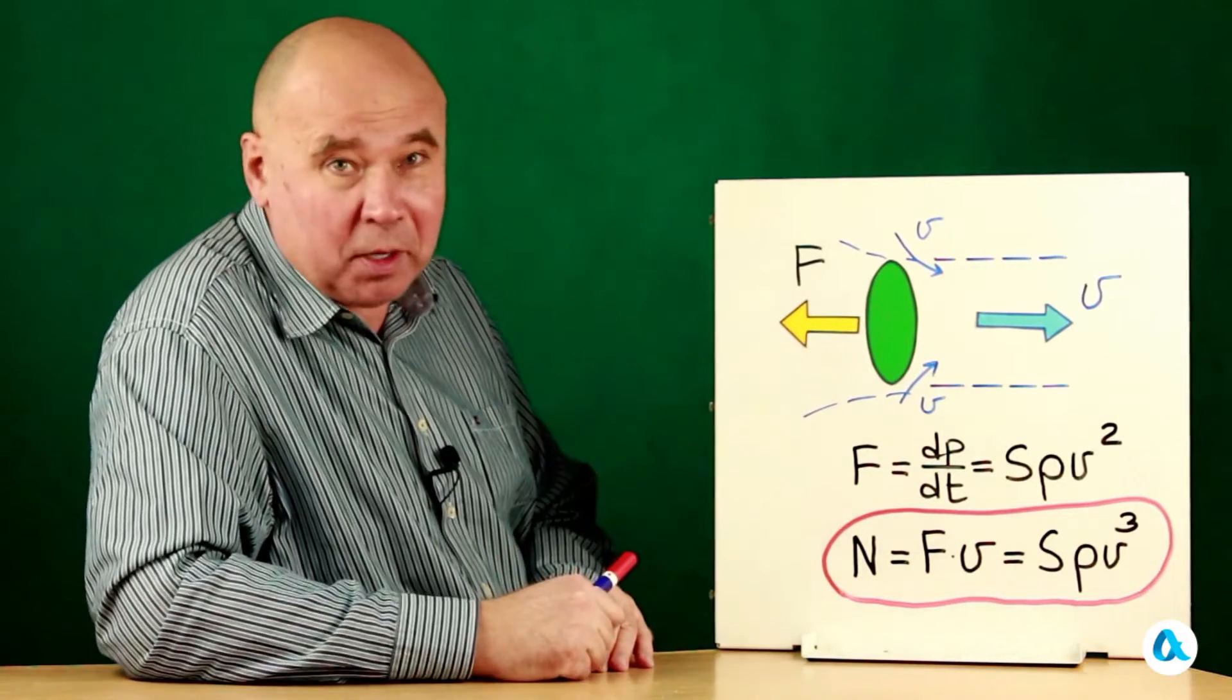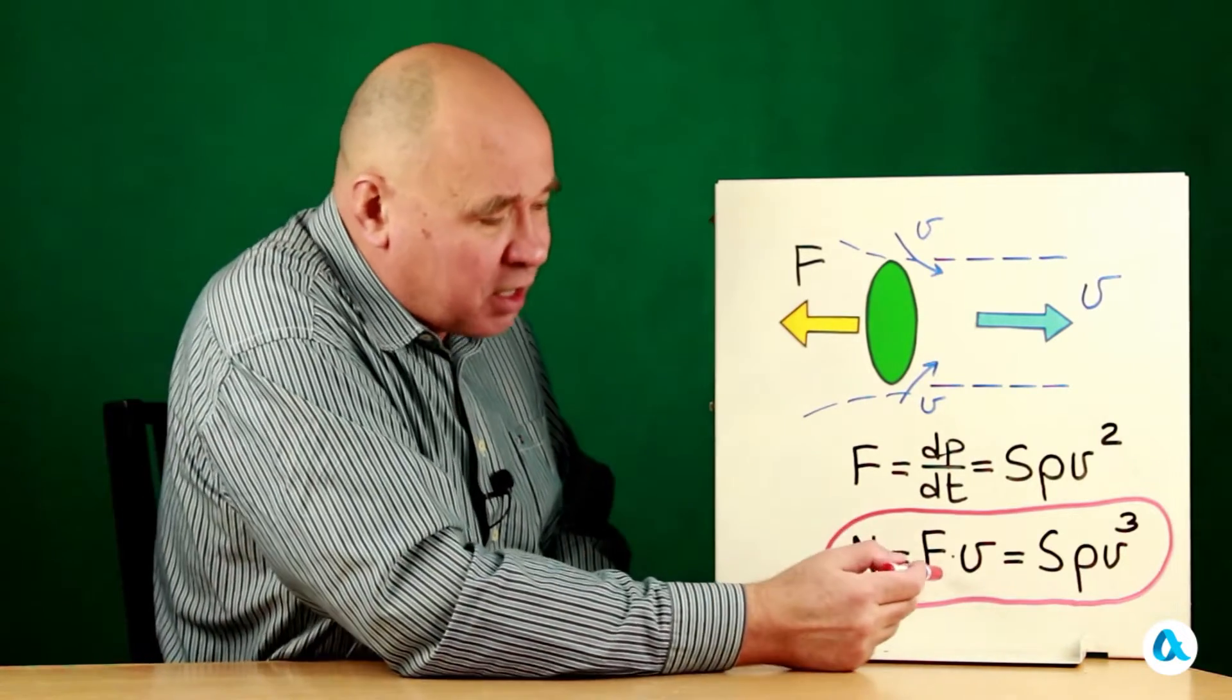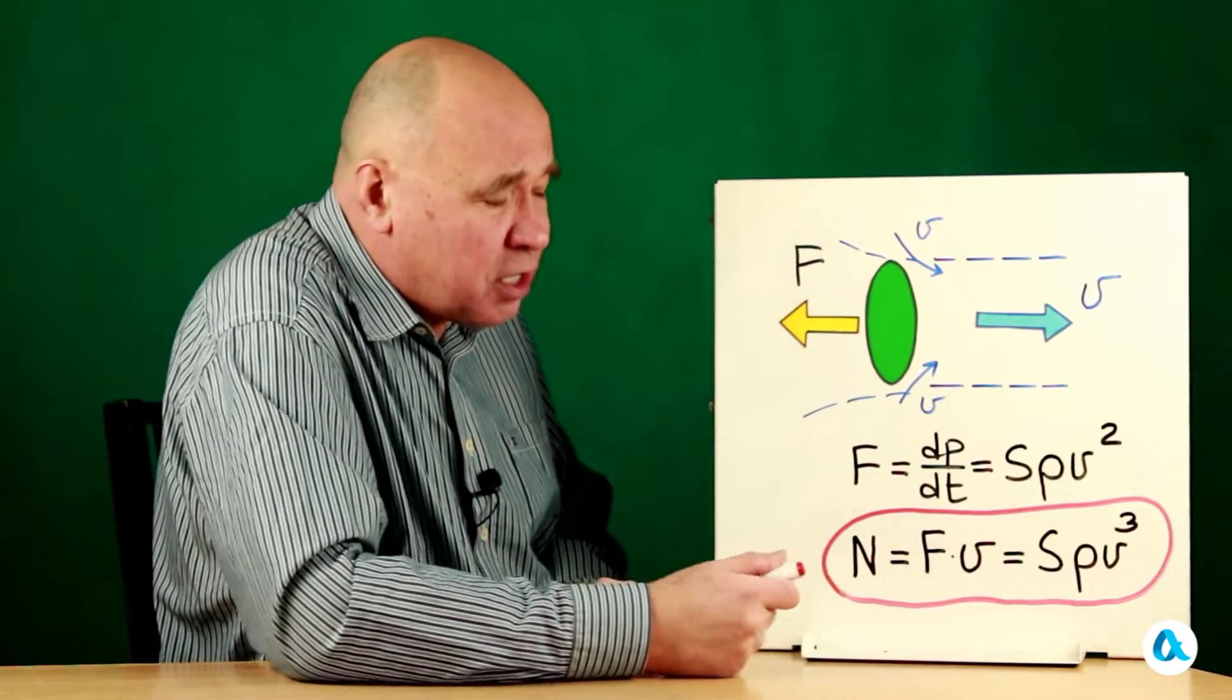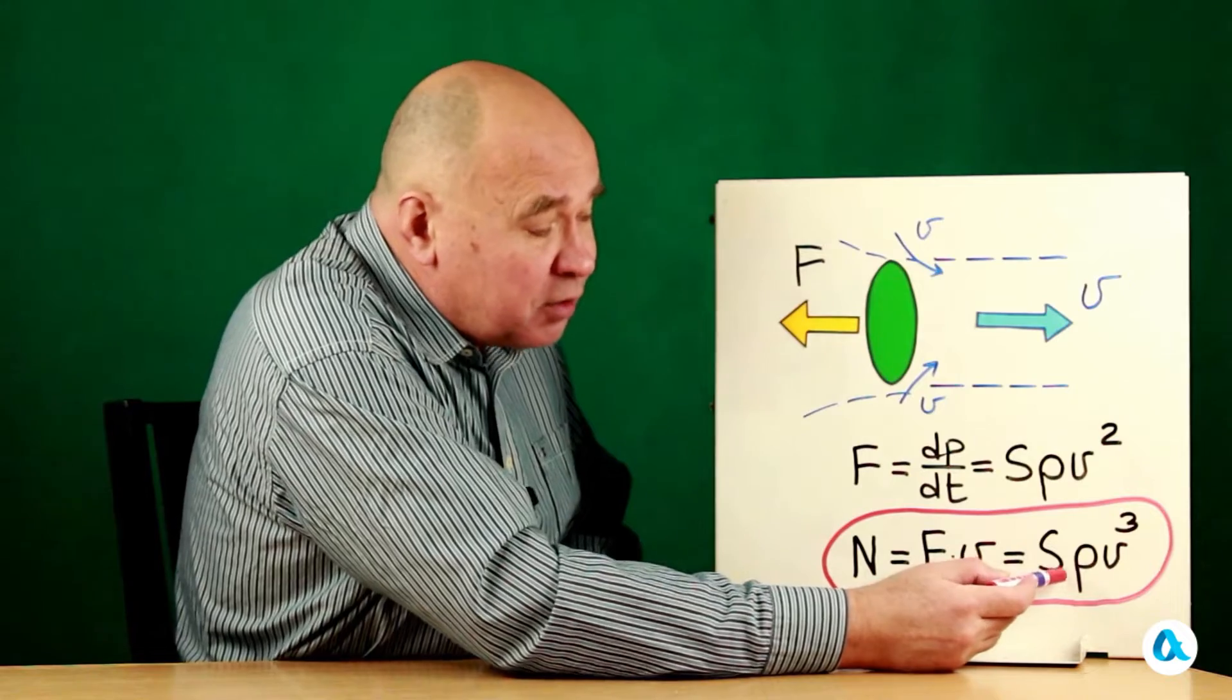The next step, I'll now forcefully express the power of the car. I gotta multiply this force by the characteristic speed again, and I get the ratio of S to rho to v cubed.